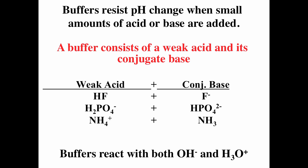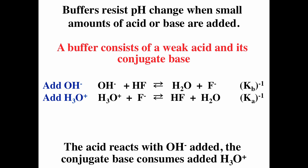Buffers consist of a weak acid and a conjugate base. Whenever you have a weak acid and its conjugate base, you have a buffer. For instance, HF and F⁻ form a buffer, as do dihydrogen phosphate and hydrogen phosphate, or ammonium ion and ammonia. The weak acid will react with any added hydroxide ion, and the conjugate base will react with any added hydronium ion. Any added hydroxide reacts with HF forming water plus F⁻; any added hydronium ion reacts with fluoride ion forming HF and water.